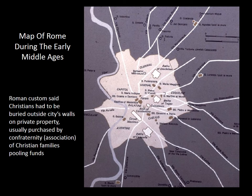Now we're going to look at some of the funerary art associated with Christian practice in the early Christian period. We're looking at a map of Rome. What's important to understand is that Christians were not allowed to be buried within the city limits. They had to be buried outside the city walls, so they would purchase property and create their tombs within those spaces, usually with lots of other Christians. All the earliest Christian art in Rome is far from the Colosseum — you've got different catacombs where the Christians were buried.